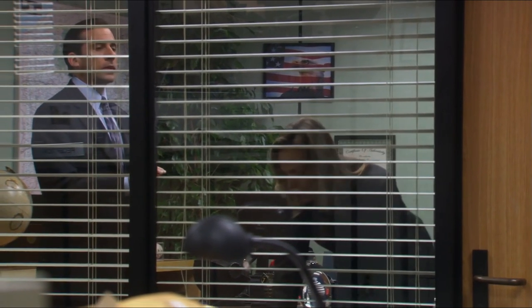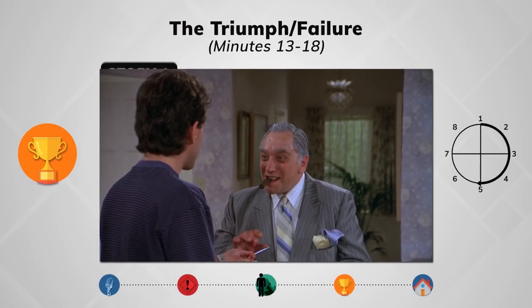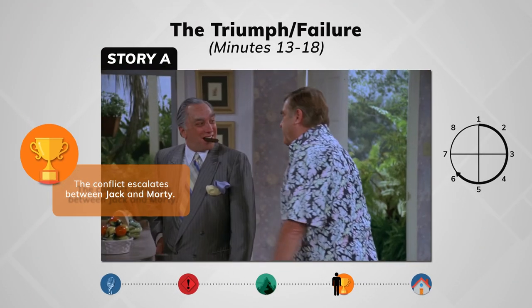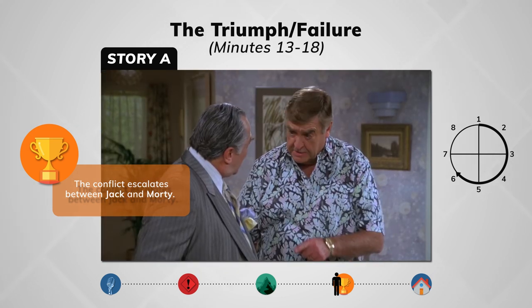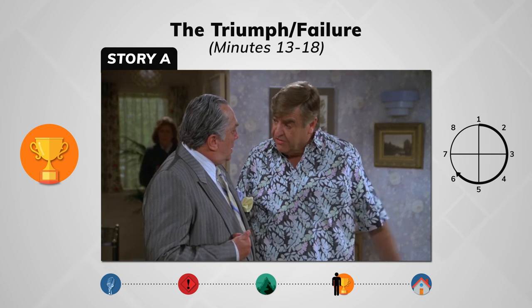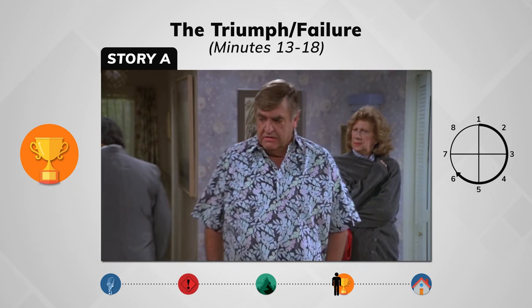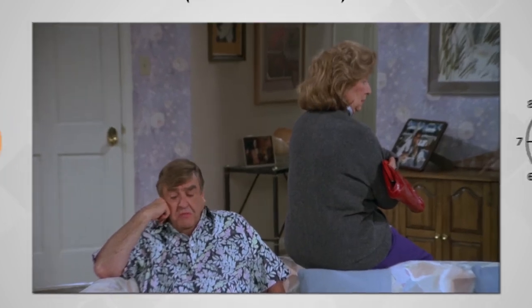In the Seinfeld episode, Jerry gives the pen back to Jack — Jerry gets what he wants. However, this doesn't actually stop the conflict. Jerry's father gets into an argument with Jack, causing further conflict and setting up the final part of the story. It promises to be a very interesting evening.